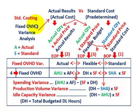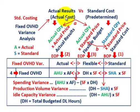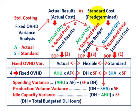When we're talking about standard costing and variance analysis, this is where we're looking at our actual results or actual cost for the period and comparing it to our standard cost or a predetermined cost. In this case, we're looking at our fixed overhead.